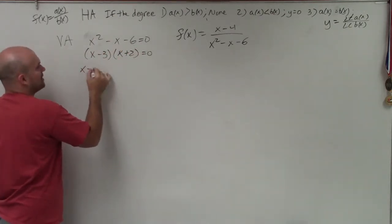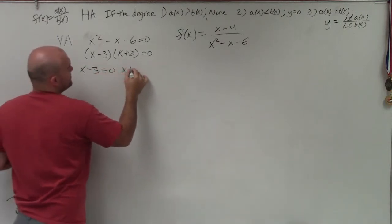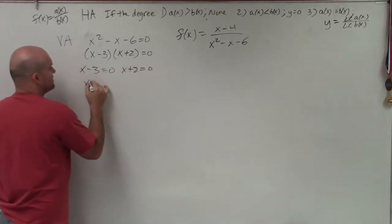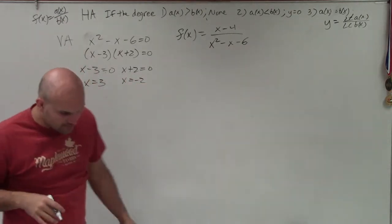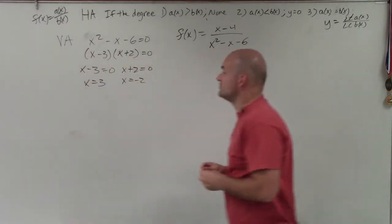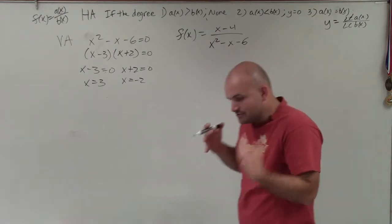Then I apply zero product property, set them both equal to 0. And therefore, I can say x equals 3 and x equals negative 2. So now that I have x equals 3 and x equals negative 2, now I have two asymptotes.